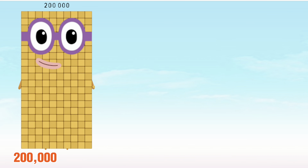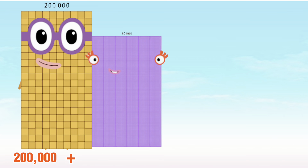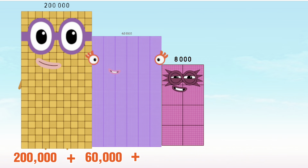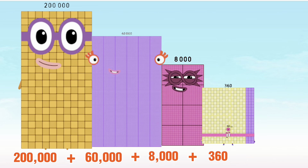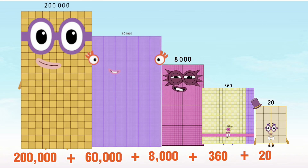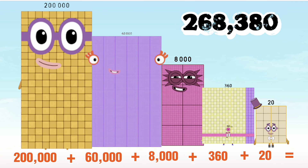200,000 plus 200,000 plus 60,000 plus 8,000 plus 360,000 plus 20 is equal to 268,380.